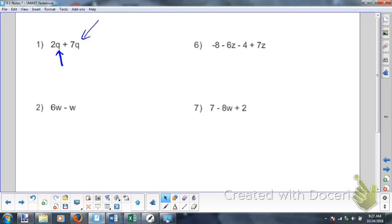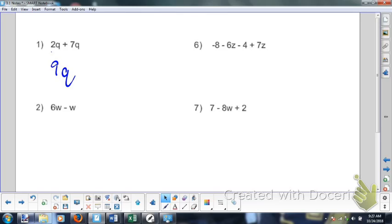So in this case we just have Qs. So right here for problem number one I have two Qs plus seven Qs. How many Qs? Well I can add two plus seven is nine and the Qs go along for the ride. Nine Q.